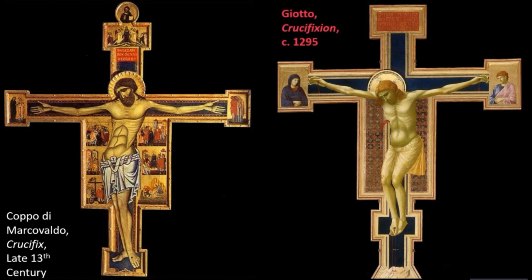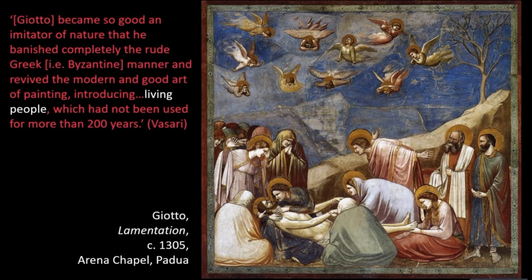Not only does Giotto's crucifixion signify a more naturalistic approach to the human body, it also shows a more humane understanding of the Christian stories, and it appealed to a population who needed empathy at a time of repeating plagues throughout Europe. Giotto's famous lamentation from the Arena Chapel in Padua emphasizes a heightened emotionalism and an attempt to use dramatic devices to heighten the human nature of the scene. Figures with their backs to the viewer frame Christ and his mother, and every individual expresses a slightly different personal reaction with different gestures that heighten and intensify their own humanity.